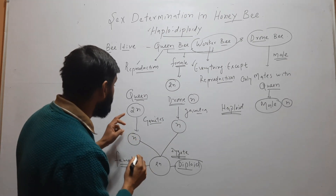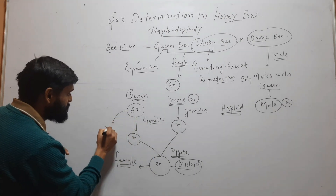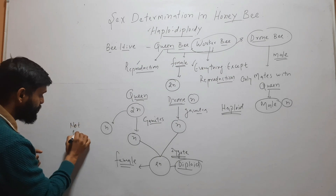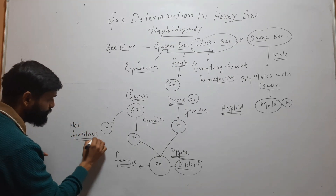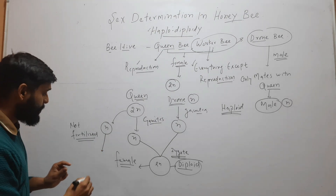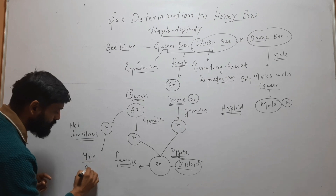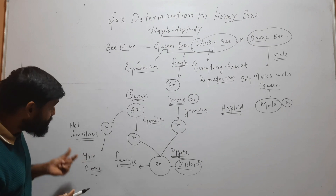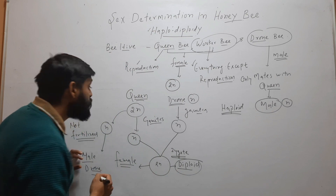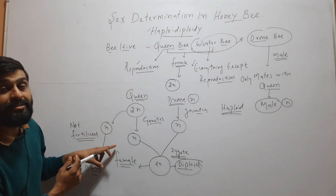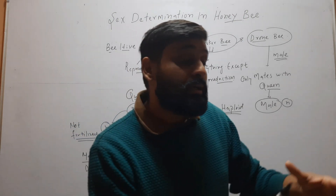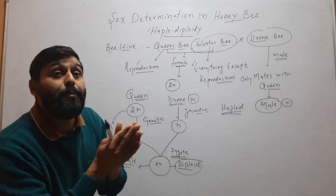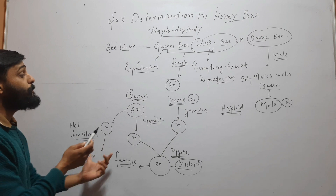But when any gamete produced by the queen bee is not fertilized, this unfertilized gamete will form a male — that is, a drone. The drone is haploid, so the male is haploid, and the male arises from unfertilized gametes. When any organism is formed from unfertilized gametes, without fertilization, that process is called parthenogenesis. So here, the male is produced parthenogenetically.